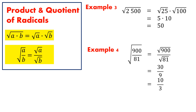In general, for any numbers A and B, the square root of A times B is equal to the product of square root of A and square root of B. So, we could take a product under a radical and separate it into two radicals, or the other way around — we could take two radicals that are multiplied together and combine them into a single product under the radical.